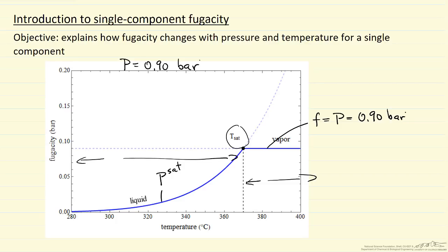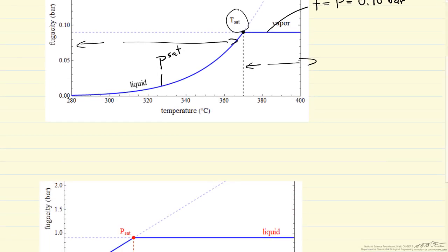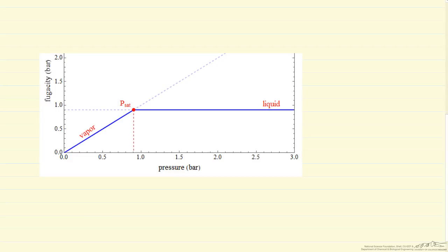Fugacity has units of pressure. So we want to look at the corresponding figure for fugacity as a function of pressure, and this is at low pressure, so this is at constant temperature, same condition as the previous figure, so the saturation pressure in this case is 0.90 bar.